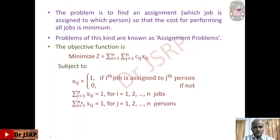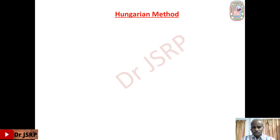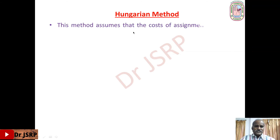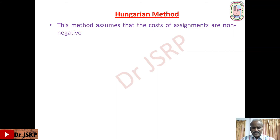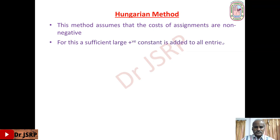This is the mathematical formulation of the assignment problem. Now consider the method: how do we solve this assignment problem? There is a method called the Hungarian method. This method assumes that the costs of assignments are non-negative, so all the performing costs should be non-negative. If there is a negative entry, we have to make it positive by adding a sufficiently large positive constant.